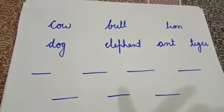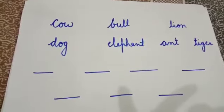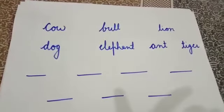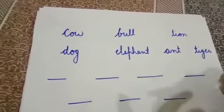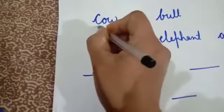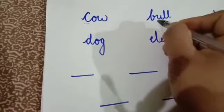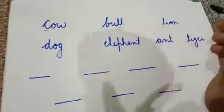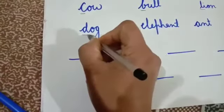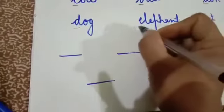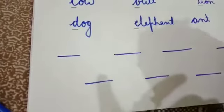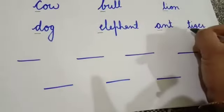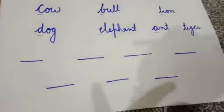This list is not in alphabetical order. To arrange this list in alphabetical order, look at the first letter of each word. In the word cow, first letter is C. In the word bull, first letter is B. In the word lion, first letter is L. In dog, first letter is D. In elephant, first letter is E. In the word ant, first letter is A. And in the word tiger, first letter is T.